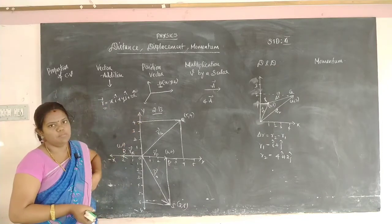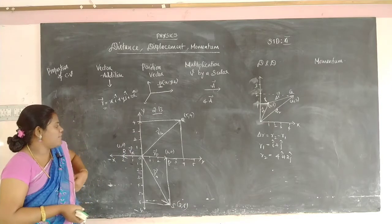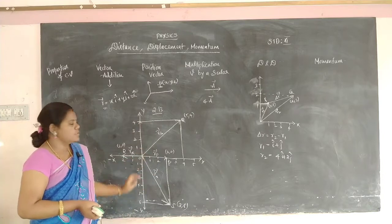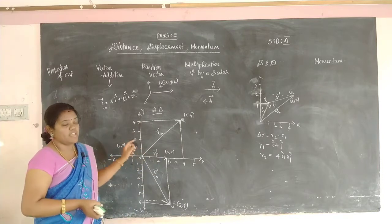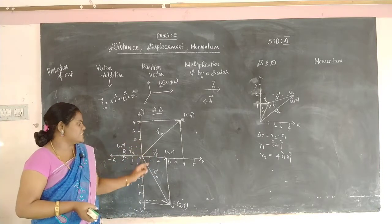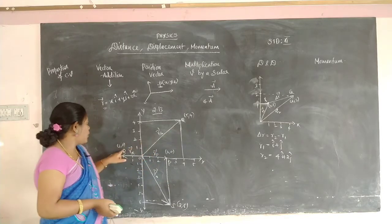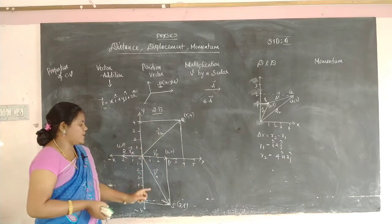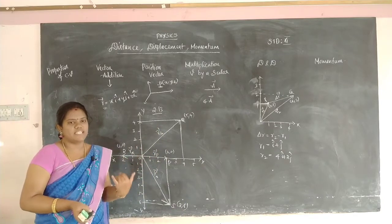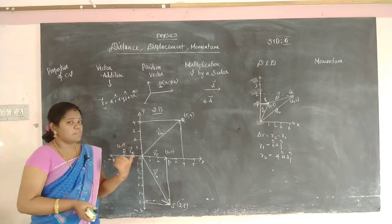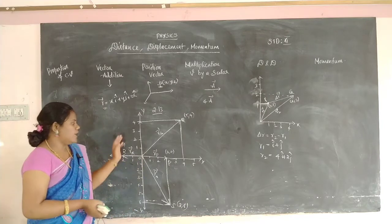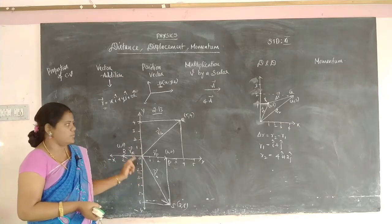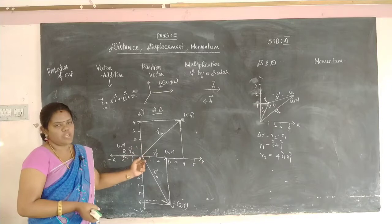Now we will do problem 2.13. A graph is given on X-Y axes that shows the positions of four points P, Q, R, and S. The four vectors are mentioned in the X, −X, Y, and −Y axes. You have to find the position vectors. Starting from P: P is located at X = 3 and Y = 4 on the graph.